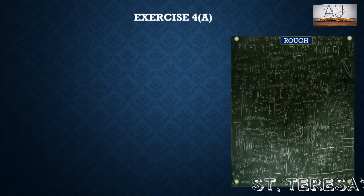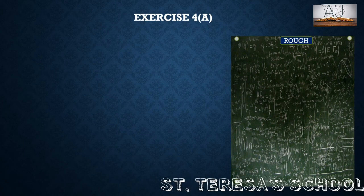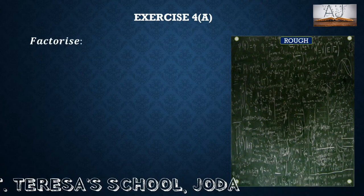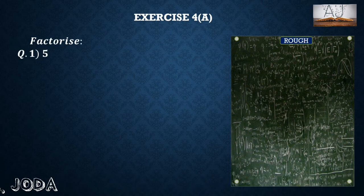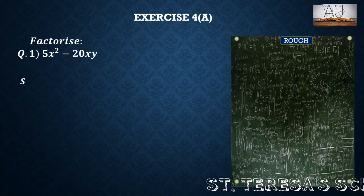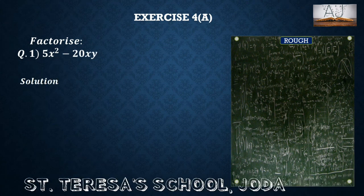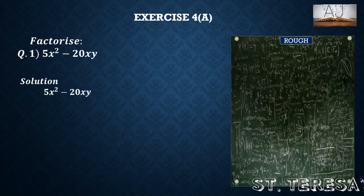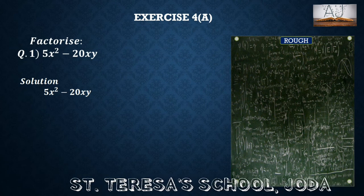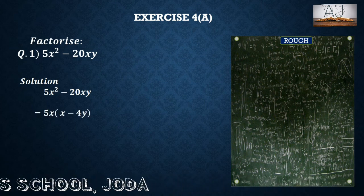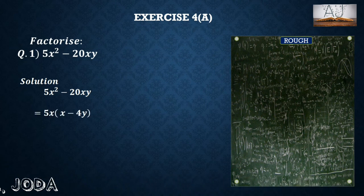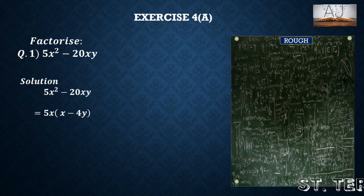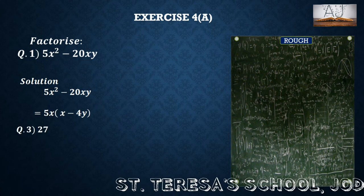Let us see the exercise now. Exercise 4a, question number 1. We have 5x square minus 20xy. The common factor from both terms is 5x. So what is left inside the bracket is x minus 4y. So the factors are 5x and x minus 4y.